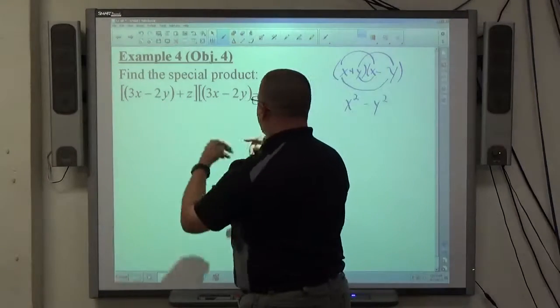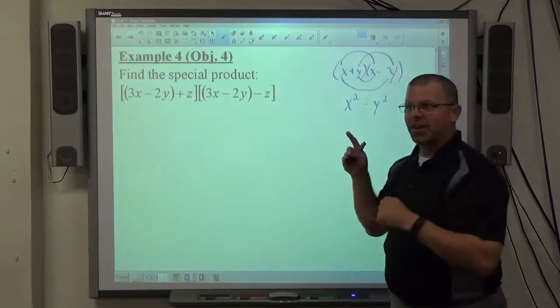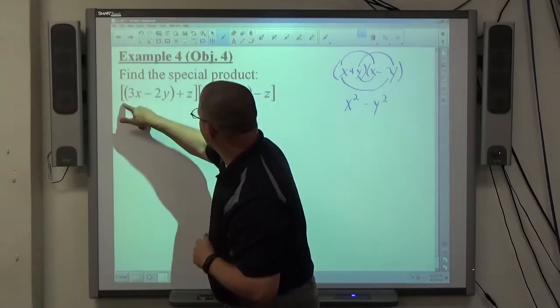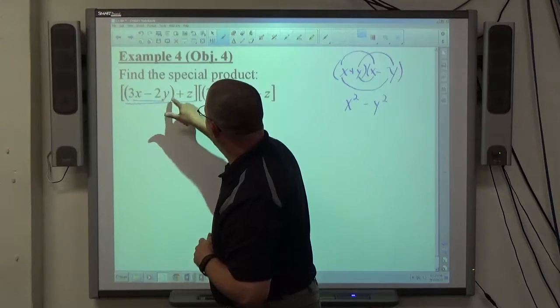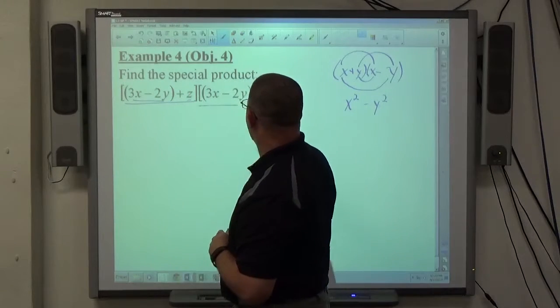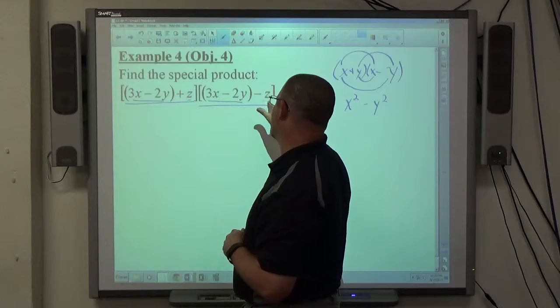So now we get to this, which looks much easier than this, right? But again, looking at this, we have this group, which is object 1 plus object 2. The second group is same object 1 minus same object 2.